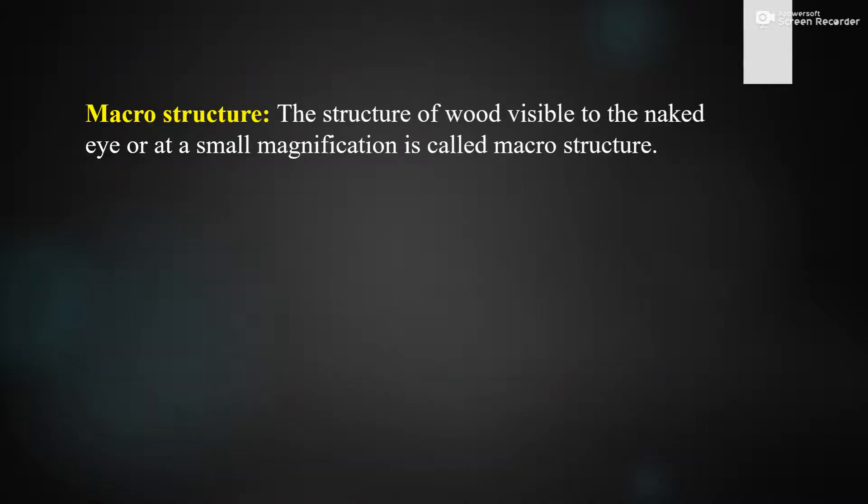What is meant by macro structure? The structure of wood visible to the naked eye — if we are seeing the tree, what all things we can see with our naked eye, not with a microscope — that is the macro structure. The structure of wood visible to the naked eye or at a small magnification is called macro structure.